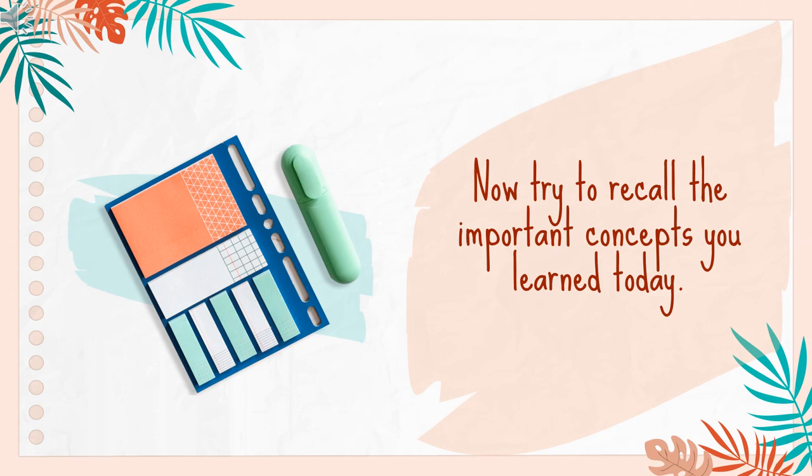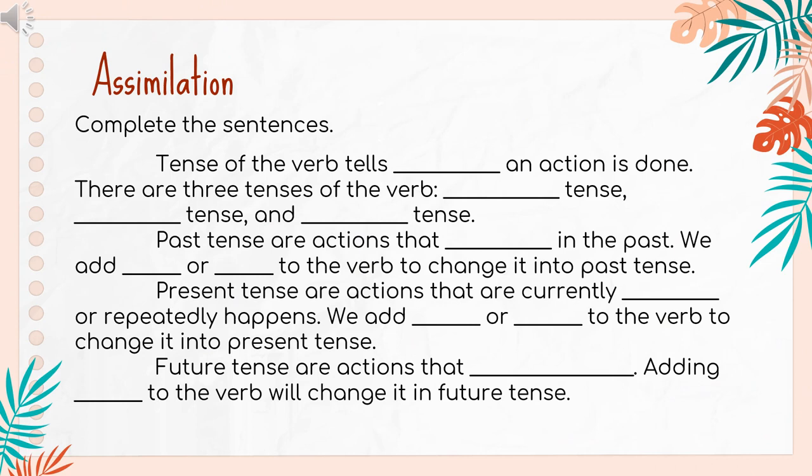Now, try to recall the important concepts you learned today. Complete the sentences. Tense of the verb tells when an action is done. There are three tenses of the verb. Past tense are actions that happened in the past. We add "-d" or "-ed" to the verb to change it into past tense. Present tense are actions that are currently happening or repeatedly happen. We add "-s" or "-es" to the verb to change it into present tense. Future tense are actions that will happen. Adding "will" to the verb will change it into future tense.